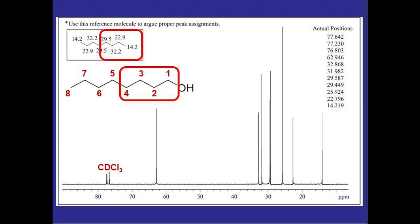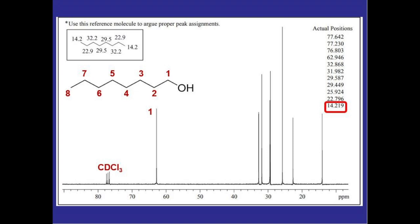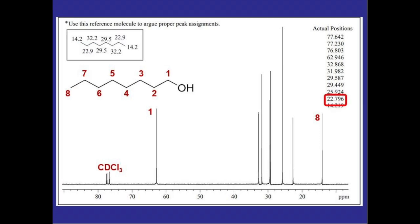So let's start off by looking at carbons one and eight. Normally without the oxygen on the molecule we would expect to see both of them around 14.2 but one being directly attached to an oxygen is going to be the most de-shielded carbon on this molecule around 63 so we can go ahead and label that peak as carbon one whereas carbon eight we would still expect to see around 14.2 which we see an actual value here so we'll label the most shielded peak as carbon eight. Now if we look at carbon seven we would expect it to have a chemical shift of 22.9 which if we look at the actual positions we see one right around there so we'll go ahead and label that peak as carbon seven.